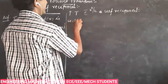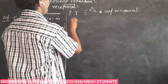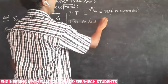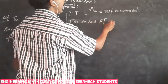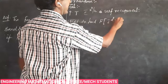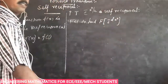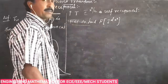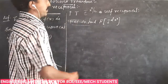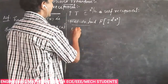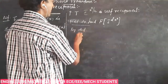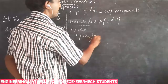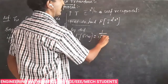We claim to first find the Fourier transform of e power minus a squared x squared. Just apply the definition. By definition, Fourier transform of f of x is equal to 1 by root of 2 pi.